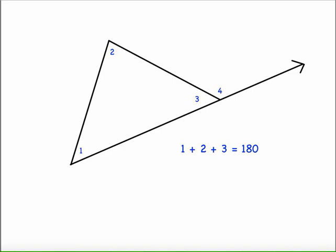We know that the measure of angle one plus the measure of angle two plus the measure of angle three have to add to 180 degrees. But if you look closely, angle three and four create a linear pair. They're supplementary. So the measure of angle three plus the measure of angle four also adds to 180 degrees.